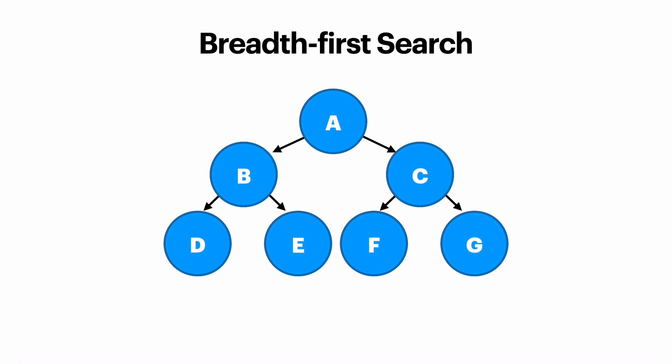So how do we implement a breadth-first search? It's really similar to how we implement a depth-first search. The only difference is the underlying data structure is called a queue as opposed to a stack.